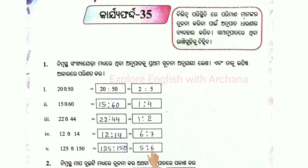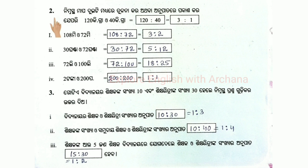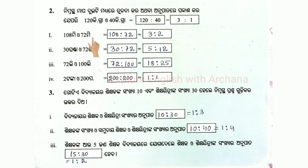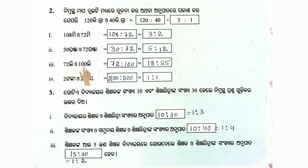ચાલો — number 1: 8 meter to 72 meter. Number 2: 30 ગંટા to 12 ગંટા, 30 is to 72, 5 is to 12. 72 liters to 100 liters, 72 is to 18, is to 25.